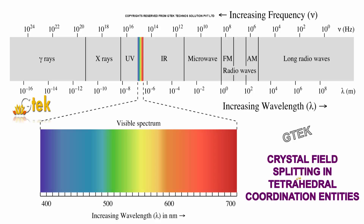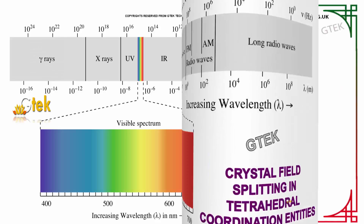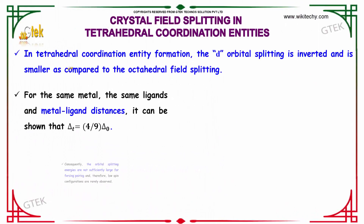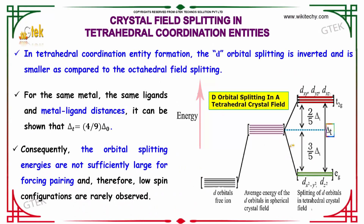This topic is on the crystal field splitting in tetrahedral coordination entities. In tetrahedral coordination entity formation, the d-orbital splitting is inverted and is small as compared to the octahedral field splitting. For the same metal, the same ligand and metal-ligand distances, it can be shown that delta_t is equal to 4/9 delta_0.